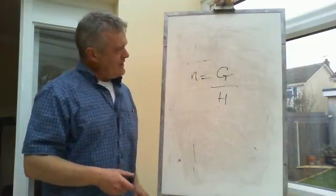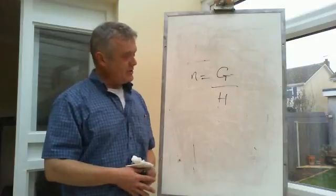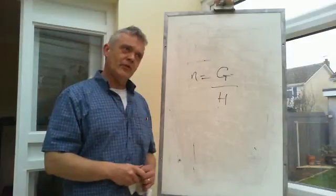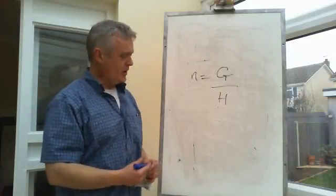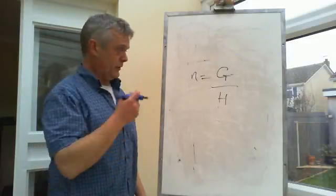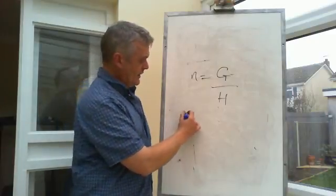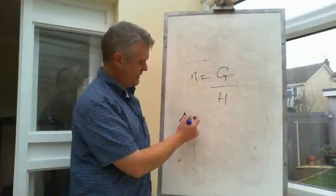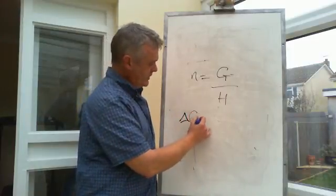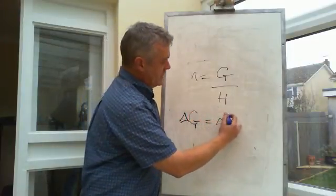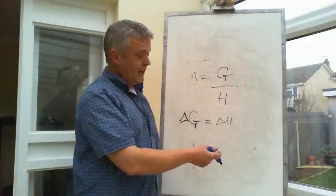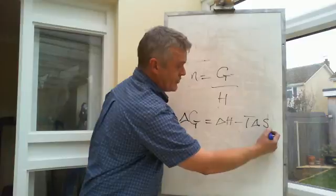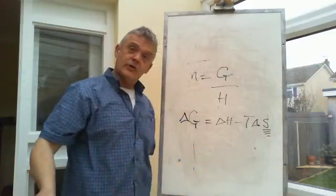Now we start to hit some of the problem areas here. Because what is the Gibbs free energy? Now Gibbs free energy involves a concept of entropy. And entropy is a very poorly understood concept. But basically, the Gibbs free energy, which is a change in energy state, hence the delta - incidentally, delta just means change - so Gibbs free energy is equal to the change in the enthalpy minus the temperature times the change in the entropy. And that's the one that causes all the problems.